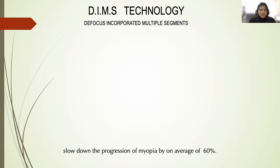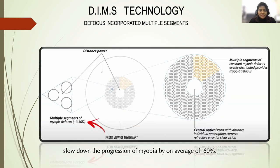The first spectacle lenses made to reduce peripheral hyperopic defocus use the DIMS technology — Defocus Incorporated Multiple Segments. This lens has a central clear area allowing rays to fall on the fovea for visual correction, and in the mid-periphery there are multiple segments of plus 3.5 diopters each, causing myopic defocus in the mid-periphery. This reduces the hyperopic defocus and thereby reduces myopia progression. Studies have shown that DIMS slows myopia progression on average by about 60 percent.